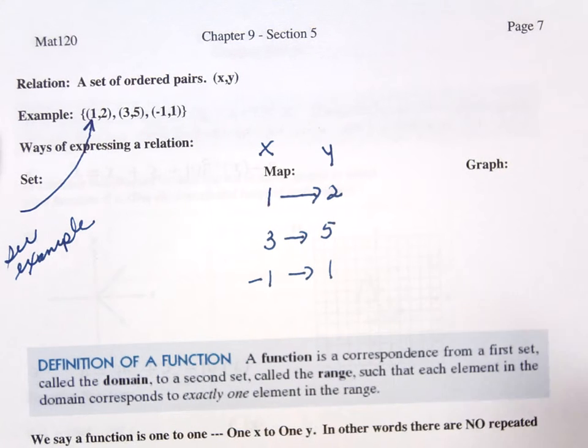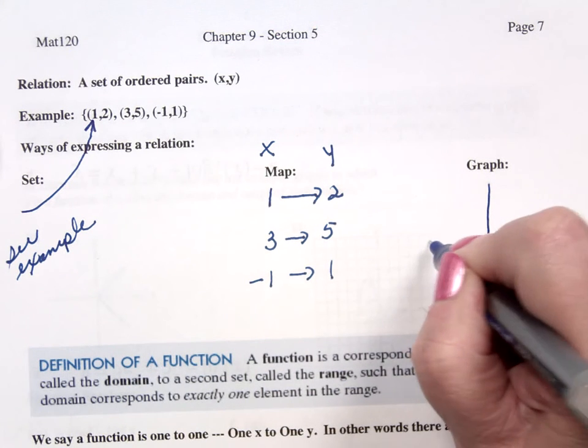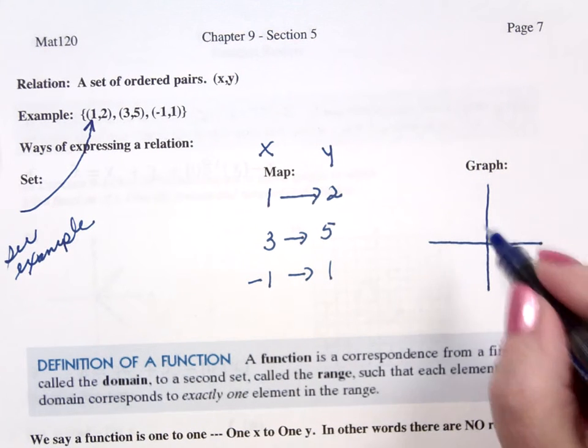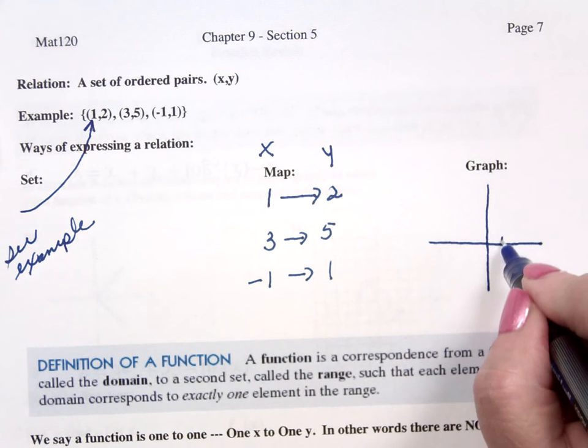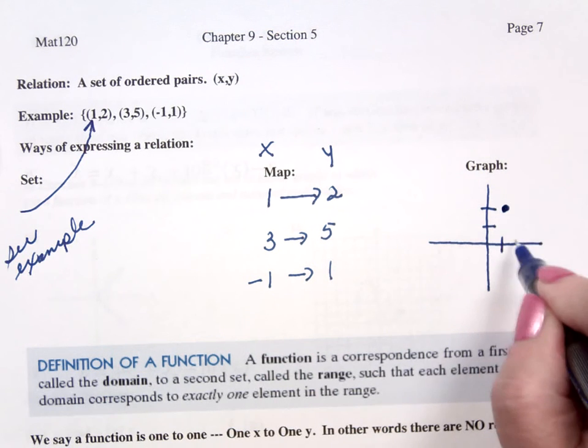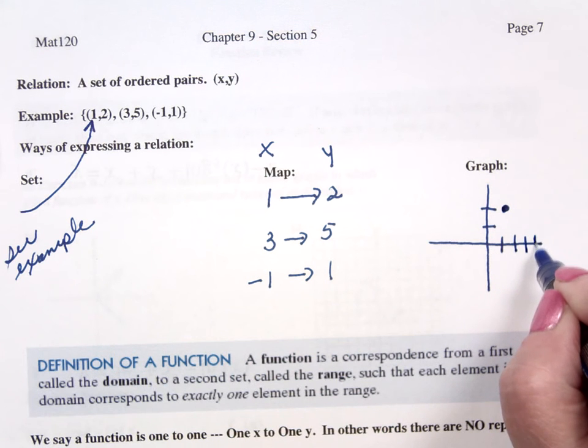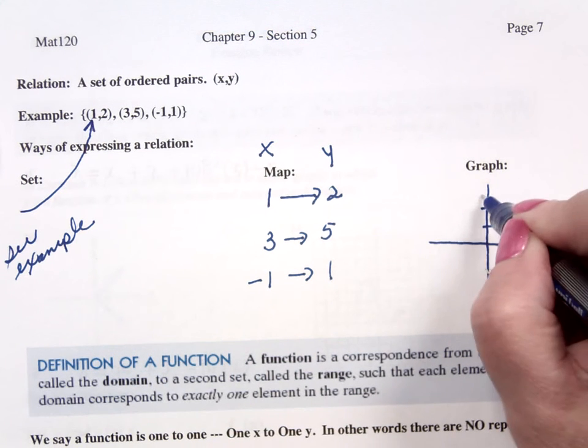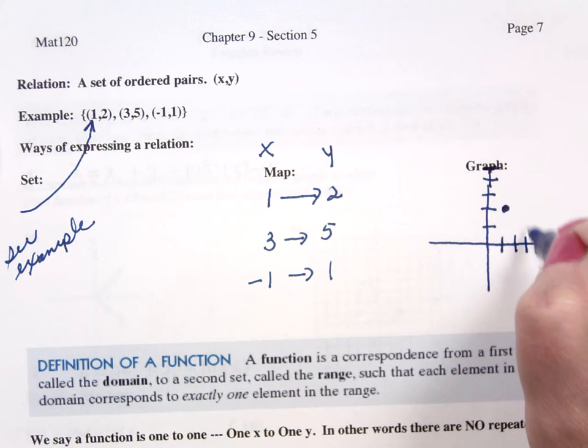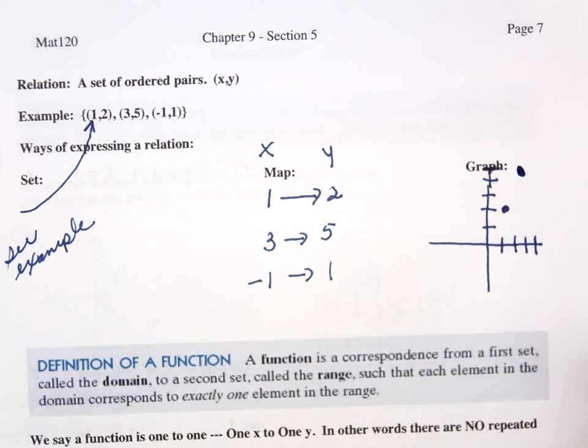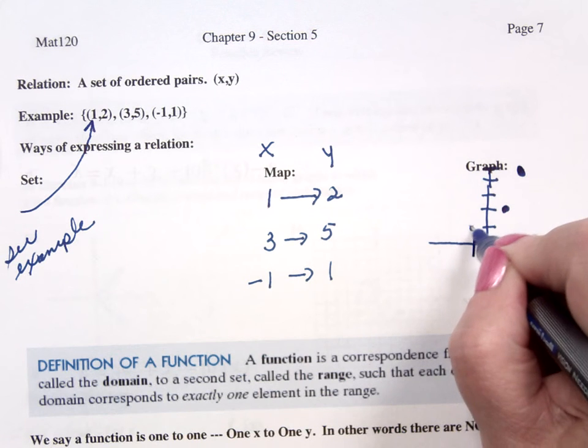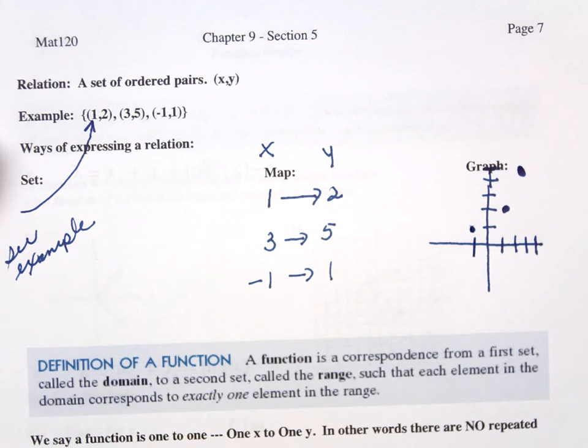The third way of expressing this would be on an XY coordinate plane graph. That says if X equals 1, Y equals 2. If X equals 3, Y equals 5. And if X equals negative 1, Y equals 1. It's a picture of what's going on.